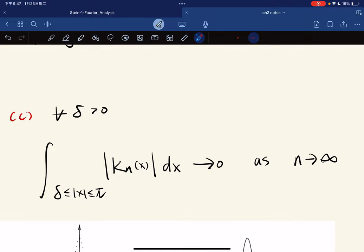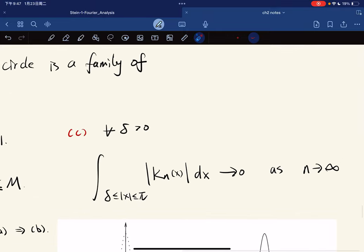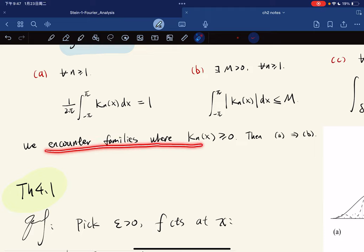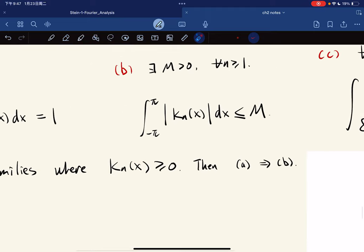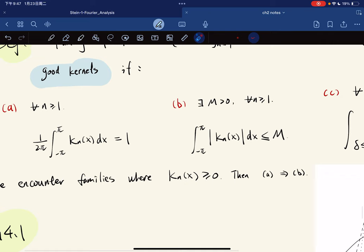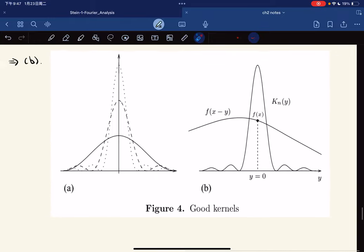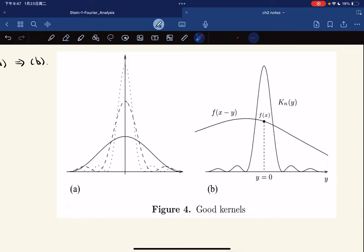You remember our first lecture we constructed a family of trigonometric polynomials. We considered a family where they're non-negative. Then we have A implies B. If they're non-negative, we can take out the negative sign, so A implies B.